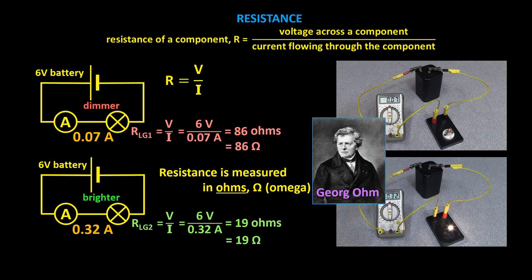Same voltage, but the light globe with about a quarter of the resistance gets about four times the amount of current. Now, the formula R equals V over I can also be written as V equals IR. This is how it's usually written. And also, I equals V over R.